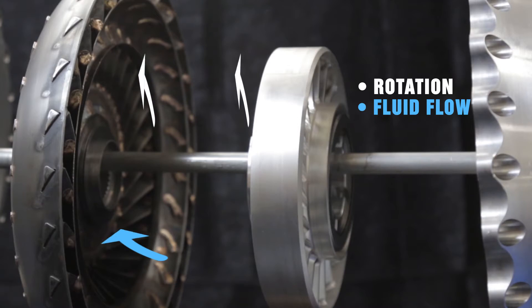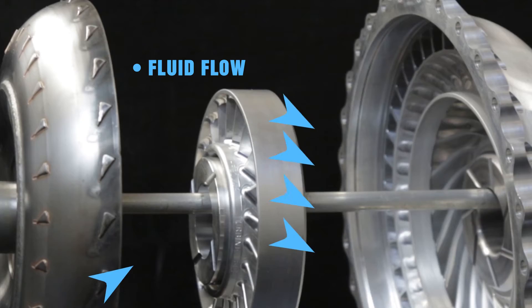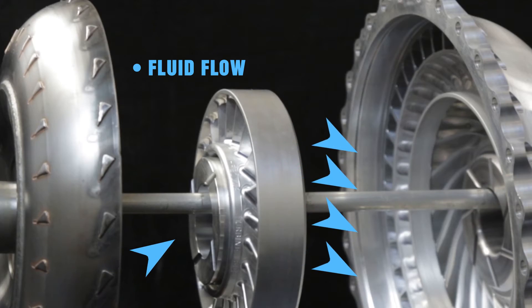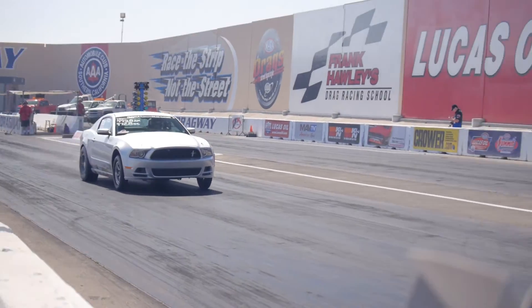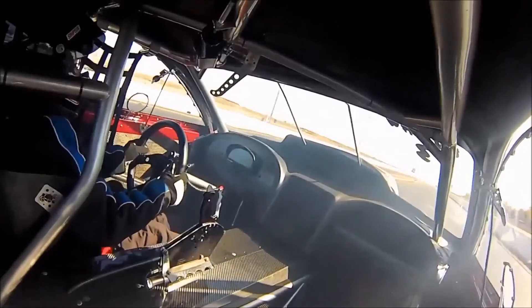By doing so, it almost completely redirects the direction of fluid flow, creating a torque multiplication effect when there is a large difference between the rotation speed of the impeller and the turbine.